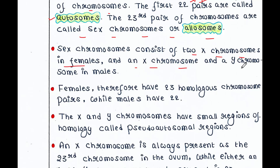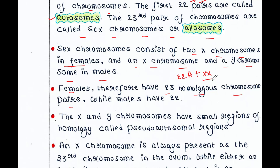Sex chromosomes consist of two X chromosomes in females and an X chromosome and a Y chromosome in males. Females therefore have 23 homologous chromosome pairs: 22 pairs of autosomes plus two X chromosomes, which are homologous since the two X chromosomes are the same.